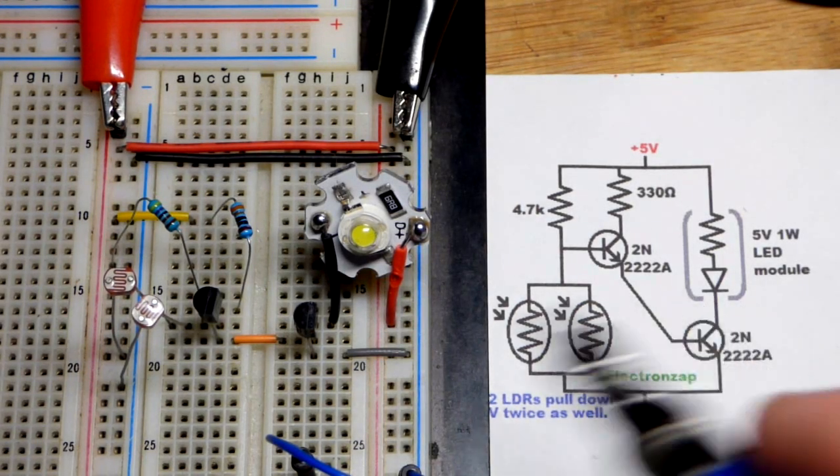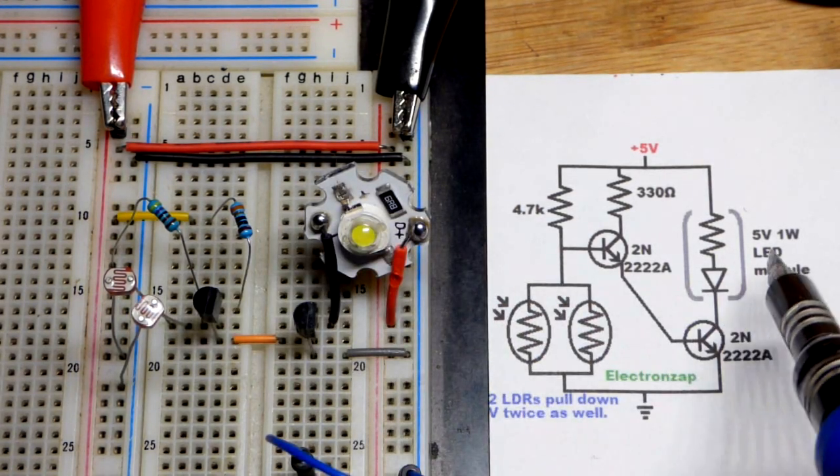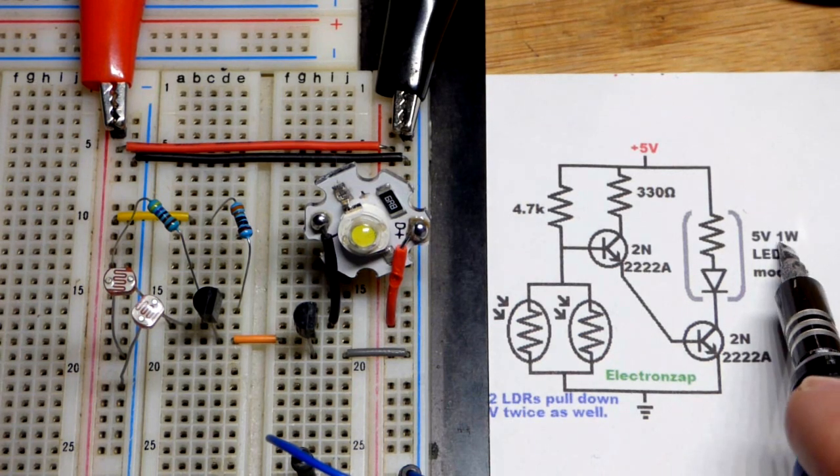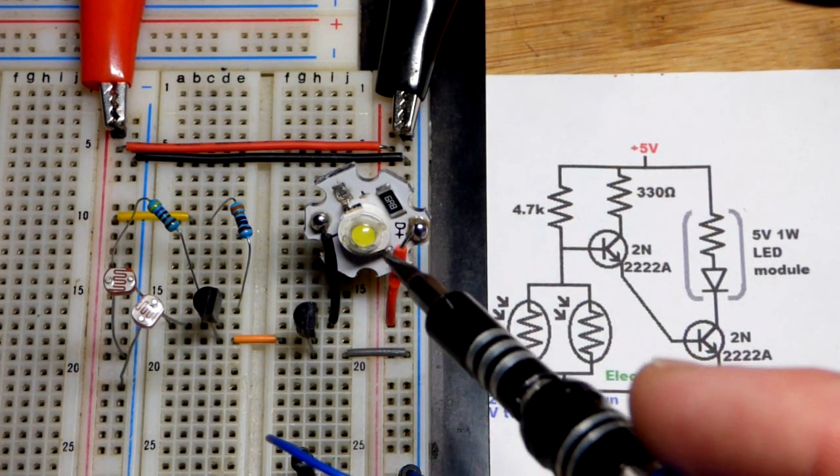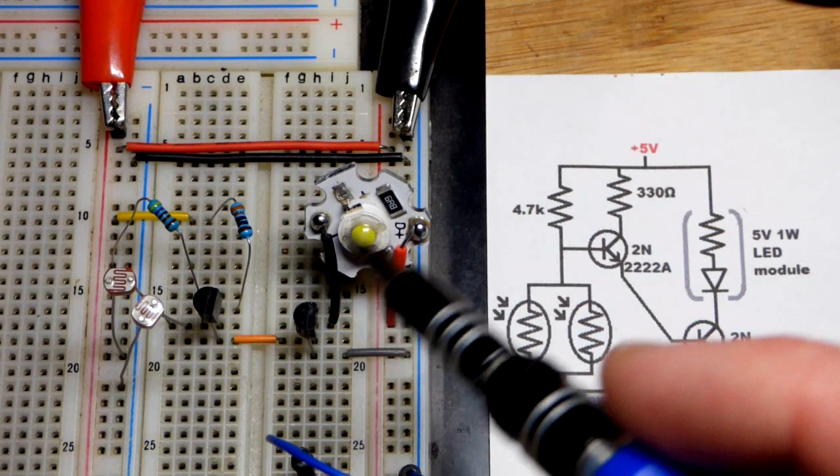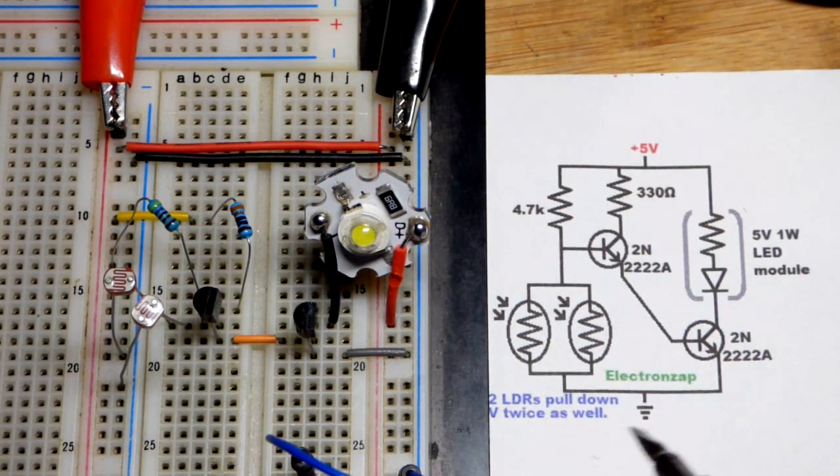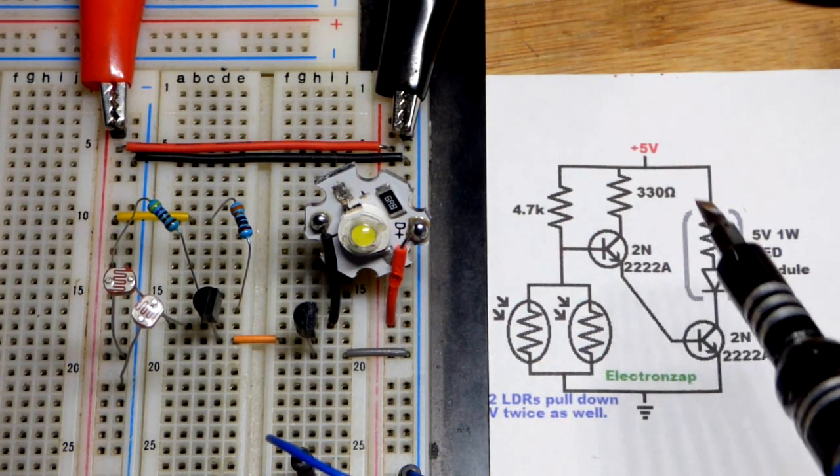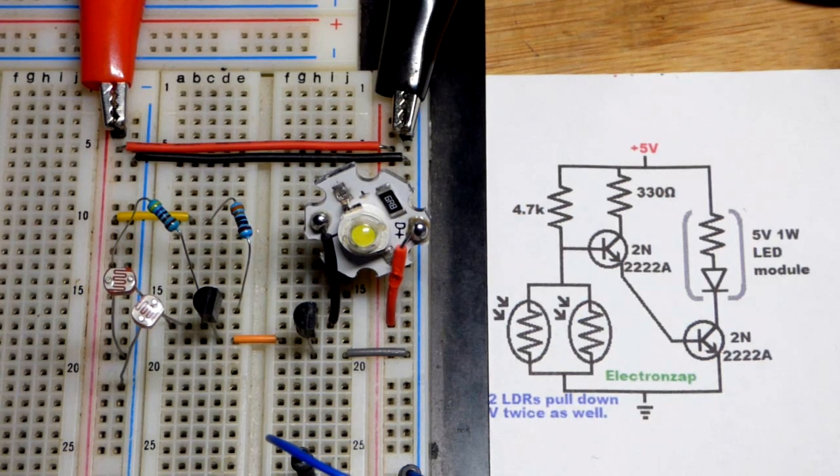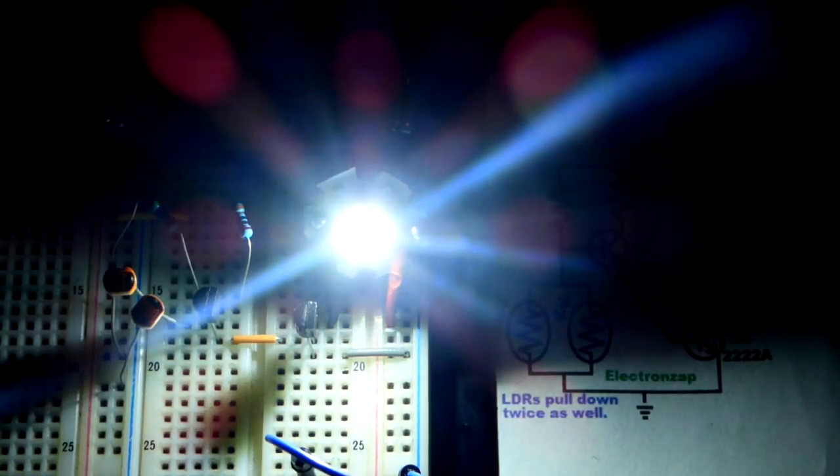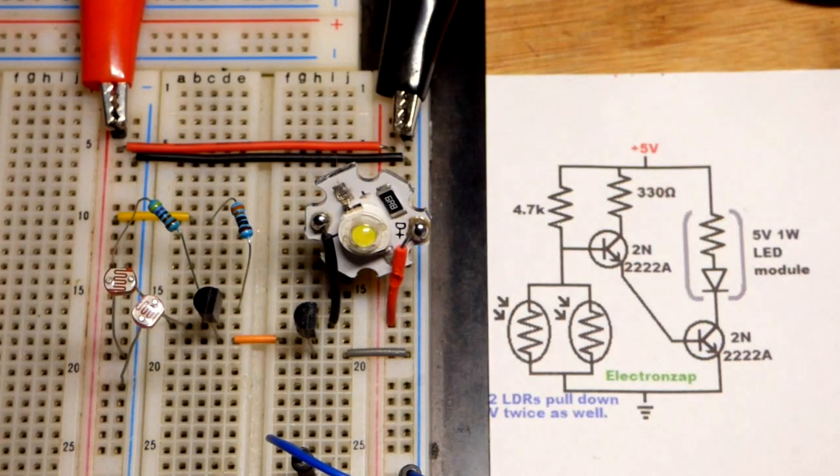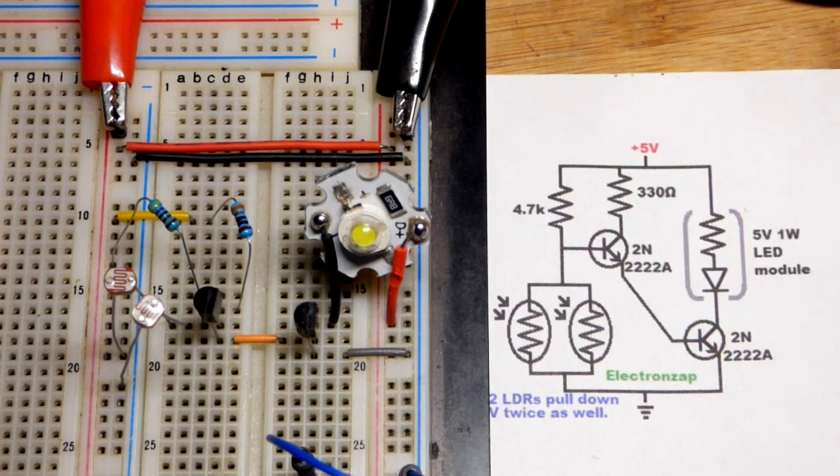Now in this video we're going to take a look at a circuit I came up with where we take a 5 volt, 1 watt LED module right here. You just apply 5 volts across it and it lights up. But we have other circuitry here to make it so that it lights up when it gets dark enough as you can see there. So it's basically a night light.